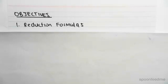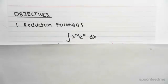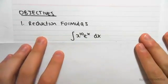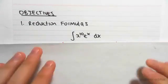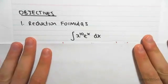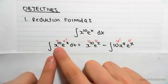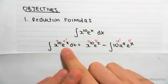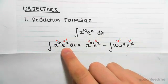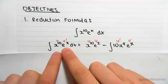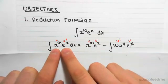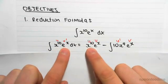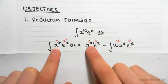The objective of this video is to talk about reduction formulas. Let's say we wanted to integrate x to the power of 10 times e to the x dx. We'd use integration by parts, so we call v' equal to e to the x — because when you integrate e to the x you get e to the x, which keeps it simple — and we call u equal to x to the 10.